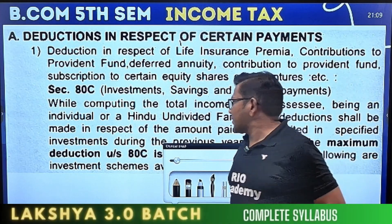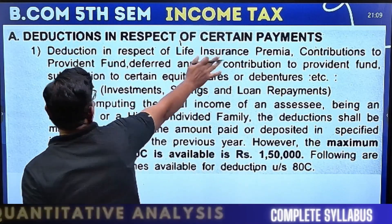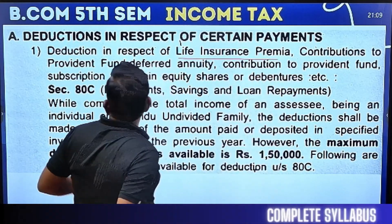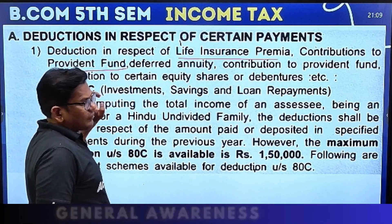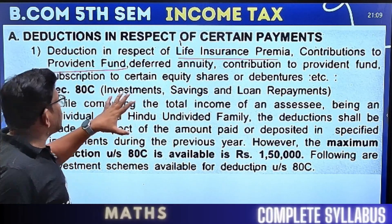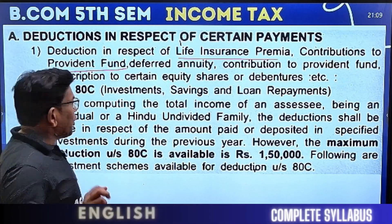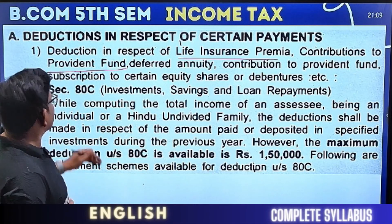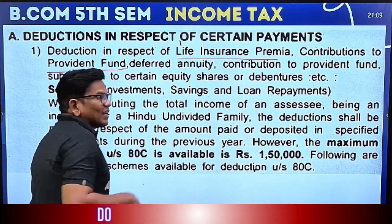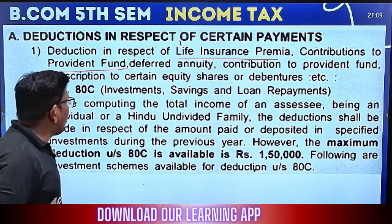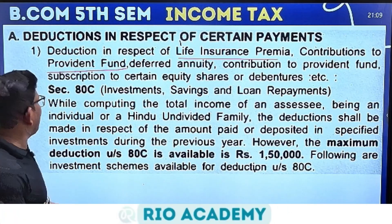Self-related deduction in respect of life insurance premium, contribution to PF, deferred annuity, contribution to provident fund, subscription to certain equity and shareholders. These are the key deductions under this payment category.